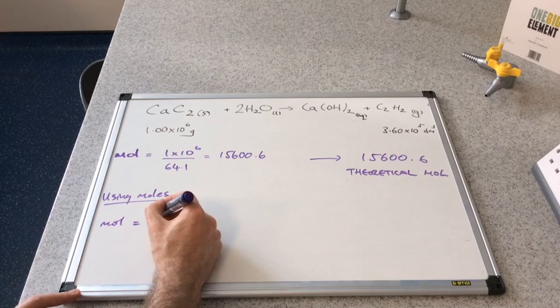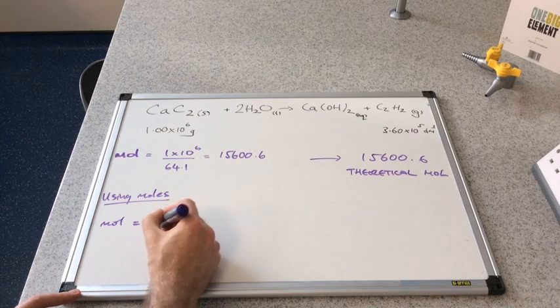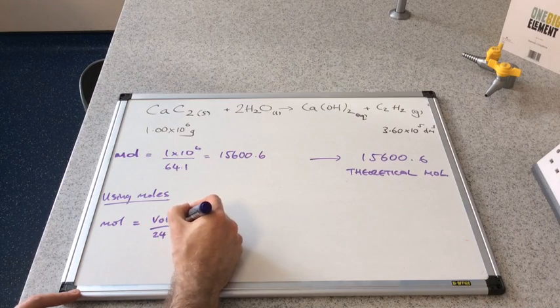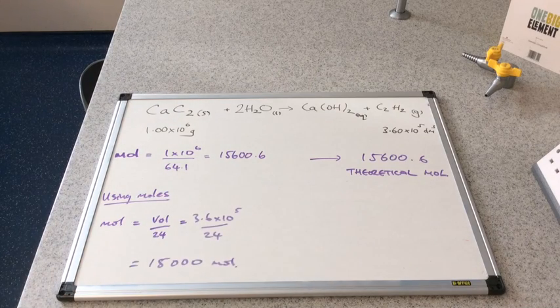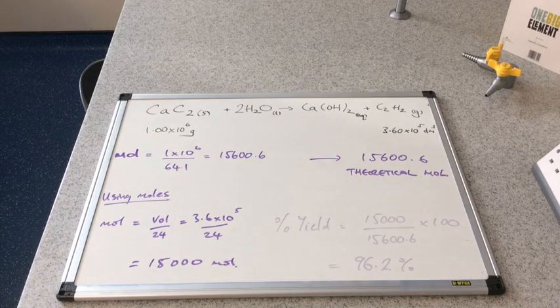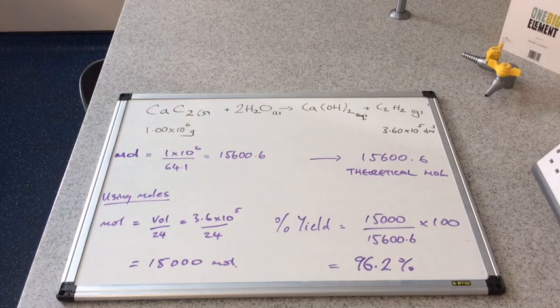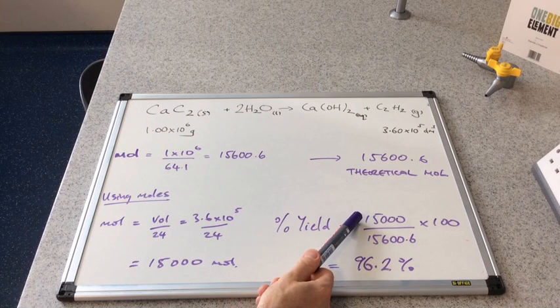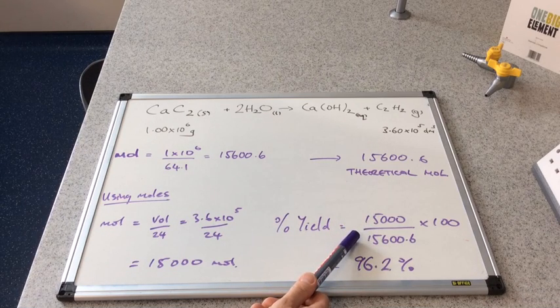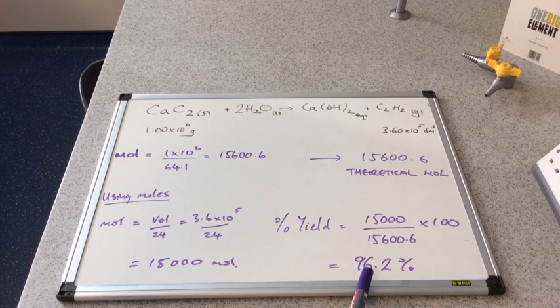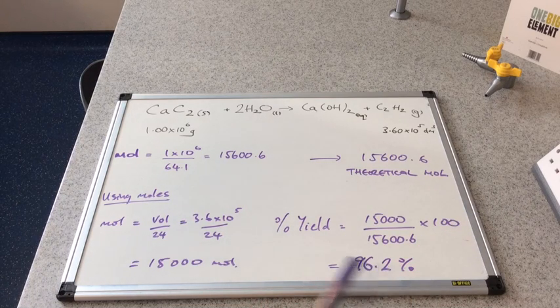So moles of gas, remember it's volume over—we're in decimetres cubed, so it will be over 24—and that comes out at a nice round number of 15,000 moles. To get it to a percentage yield, we divide the actual moles that we've made by the theoretical moles that were possible, times 100. And that comes out at 96.2%.